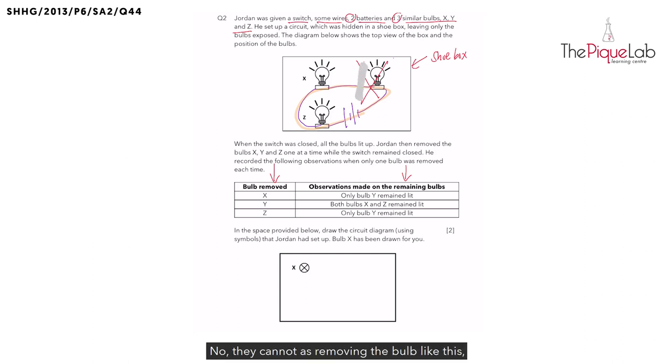as removing the bulb like this will create an open circuit and electricity is not able to flow through the other bulbs. We will not have any other bulbs lit up like what Jordan observed in his table here. So we know that the series arrangement is not a possible answer. Let's erase this.